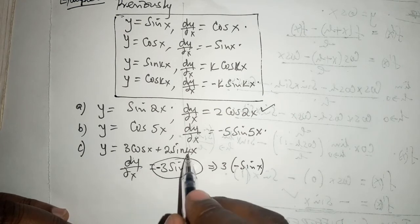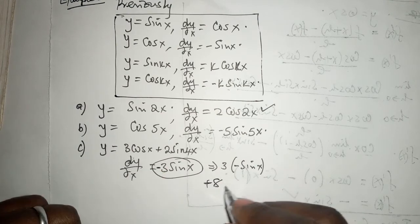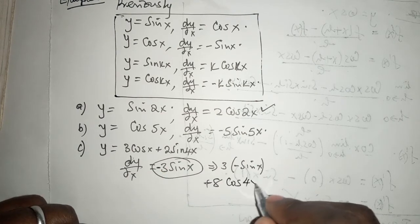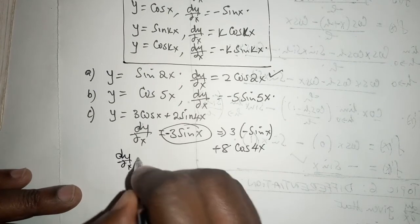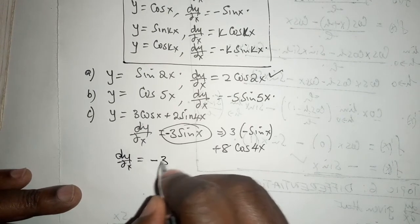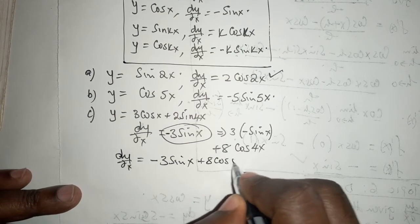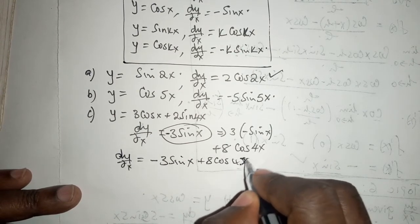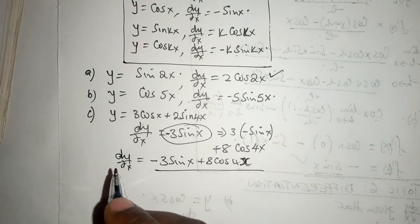This is the part where 4 times 2 becomes 8, and then the cosine of 4x. So the entire dy/dx becomes minus 3 sine of x plus 8 cosine of 4x.